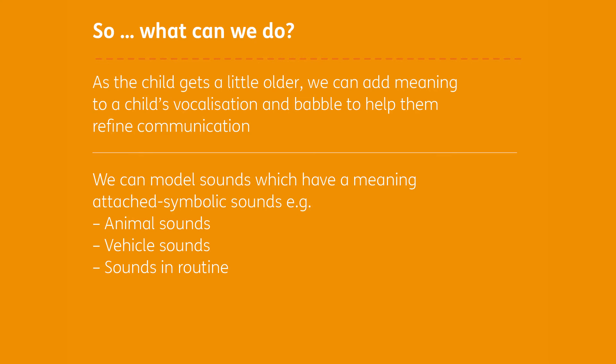As the child gets a little older, we need to add meaning to the vocalisations and babble. This helps a child refine from experimenting with sounds to beginning to add some meaning — interpreting a babble and thinking, if they were a child that could speak, what could they be saying at that moment, and adding a word in there. We can also model sounds that already have meaning attached — these are called symbolic sounds. Things like animal sounds, vehicle sounds, sounds heard in routine, such as saying 'hmm' when eating or 'uh-oh' when dropping something. They're not quite words, but they very much have a meaning attached, and children will imitate those sounds and begin to use them themselves in play.